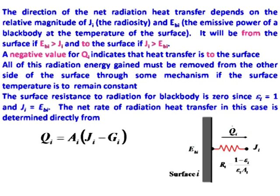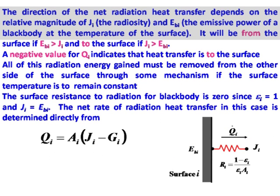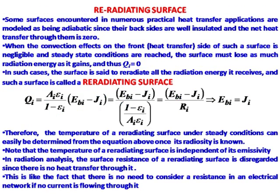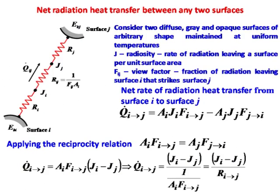This surface resistance is absent when the surface behaves like a black body — because epsilon equals 1, the denominator term disappears and j equals e_b_i. The direction of net radiation heat transfer depends on relative magnitudes: if e_b_i is greater than j, heat flows outward; if j is greater than e_b_i, it flows inward — as we saw in the cube problem with negative values.